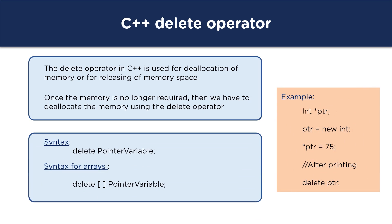Coming to the delete operator: the delete operator in C++ is used for deallocation of memory. When we no longer need to use a variable — that is, the memory is no longer required — we have to deallocate or release the memory using the delete operator. The syntax is: delete pointer_variable. For arrays the syntax is: delete[] pointer_variable. In the example, once the printing of the value is done we deallocate the memory using the delete operator.